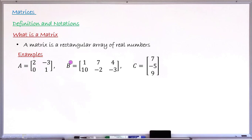Another matrix is B. Capital letter B equals: inside the square bracket you have 1, 7, 4 as numbers in the first row, and 10, minus 2, minus 3 as numbers in the second row. This is a rectangular arrangement because the number of elements in each row is the same — three numbers in the first row and three numbers in the second row.